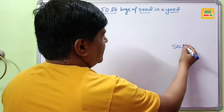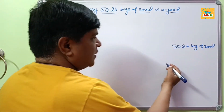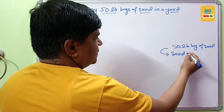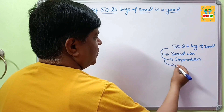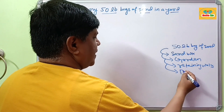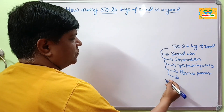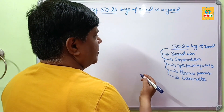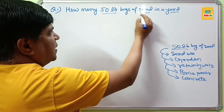This 50 lb bag of sand is used for different purposes. It is used for children's sandboxes, for garden work, for retaining walls, brick paving, or it may be used for making concrete. There are several uses of 50 lb bags of sand.